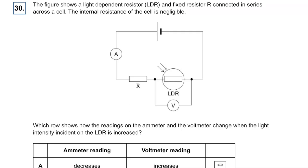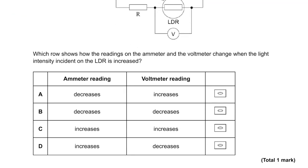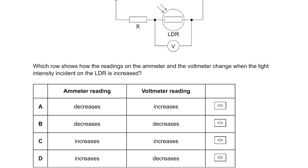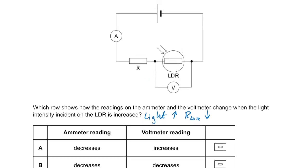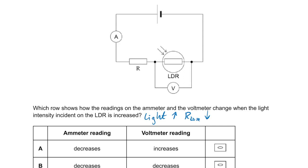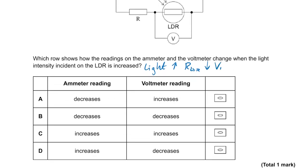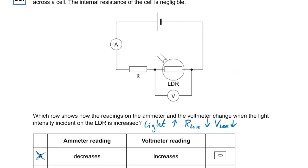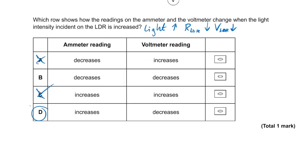Question thirty: an LDR circuit. When light increases, the resistance of the LDR goes down, so its share of the voltage also goes down. The total resistance decreases, so the total current goes up. The answer is D.